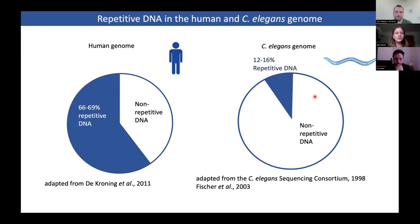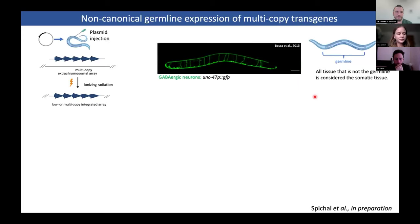Therefore, worms must have some mechanism that protects them from the expansion of repetitive elements. We wanted to investigate repetitive sequences in C. elegans by analyzing RNA expression from multi-copy transcripts.